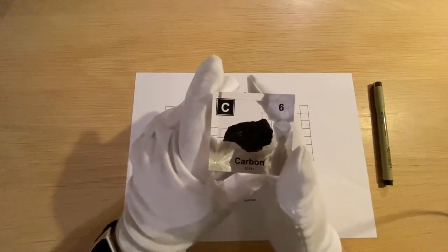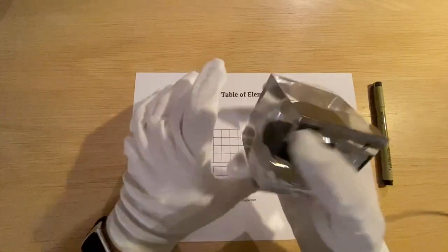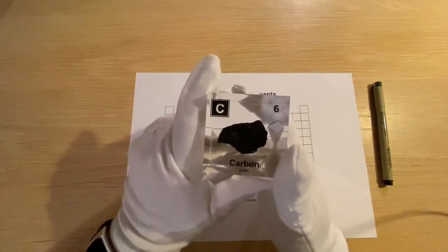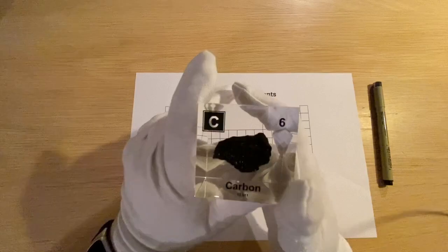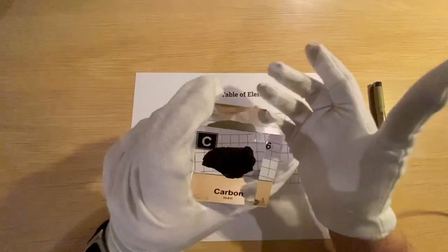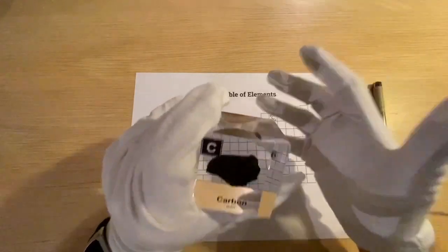And this is also why we sometimes speak of carbon-based life. If you didn't have this element, life on Earth would definitely look different and very likely would not look like it looks today. Plastic is made of oil, which is a fossil fuel, and therefore also made out of carbon structure.